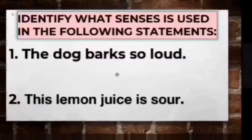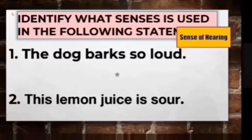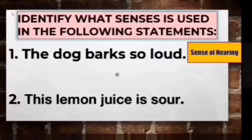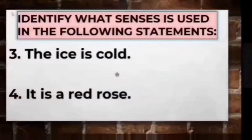Let's try to identify the senses described in the following examples. Number one: the dog barks so loud. Number two: this lemon juice is sour. For number one, the word loud describes sound, and sound is observed by using our sense of hearing — so the answer is sense of hearing. For number two, take note of the word sour; it is one of the types of tastes our tongue can identify. Therefore, the answer is sense of taste.